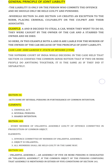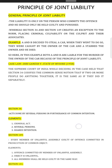Section 149 provides that every member of an unlawful assembly is guilty of an offense committed in prosecution of the common object. The elements of Section 149 are: the offense must be committed by a member of an unlawful assembly, and it comes under Section 149 when any offense is committed by any member of such an assembly.